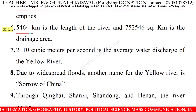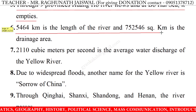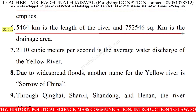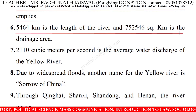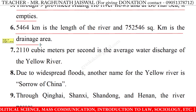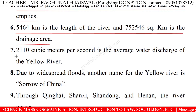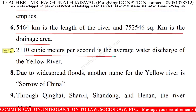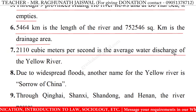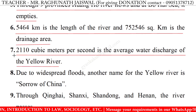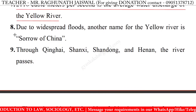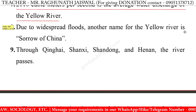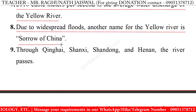6. 5,464 km is the length of the river and 752,546 km² is the drainage area. 7. 2,110 cubic meters per second is the average water discharge of the Yellow River. 8. Due to widespread floods, another name of the Yellow River is Sorrow of China.